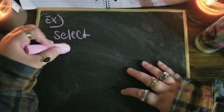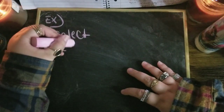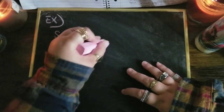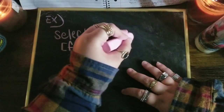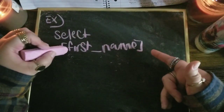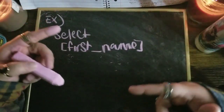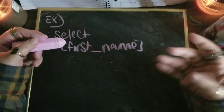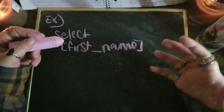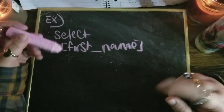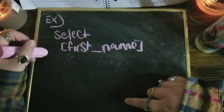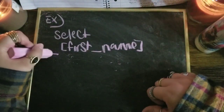You say SELECT. Let's say this is the name of the column. You're looking in a database — it's very similar to an Excel spreadsheet, but it holds more data. So you're looking in a column that says first names, right? FROM the table — we'll say FROM.